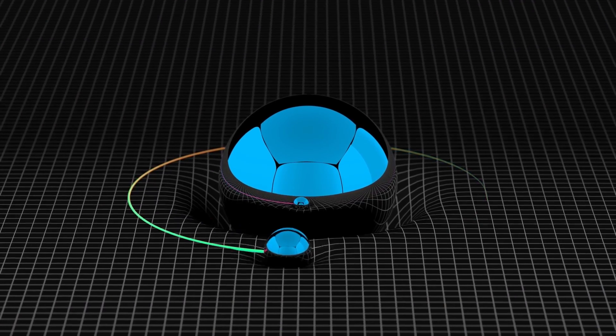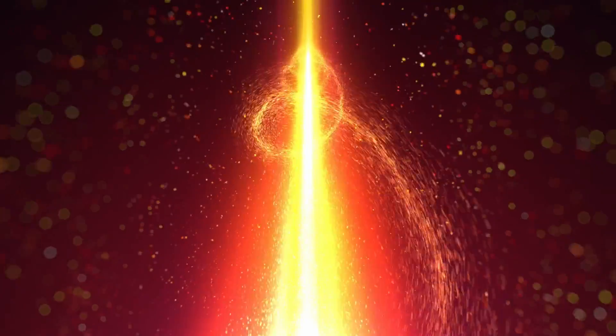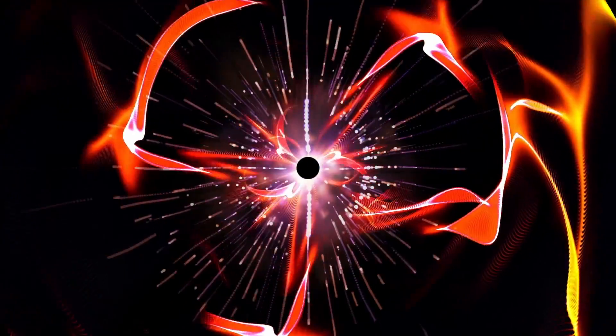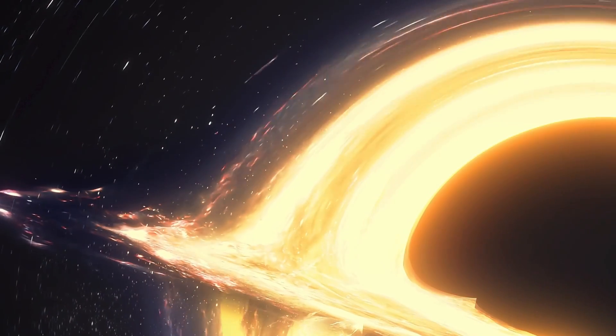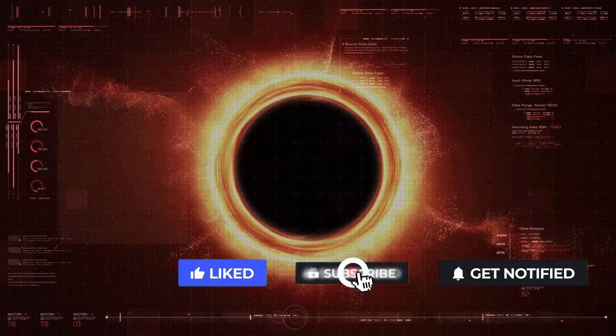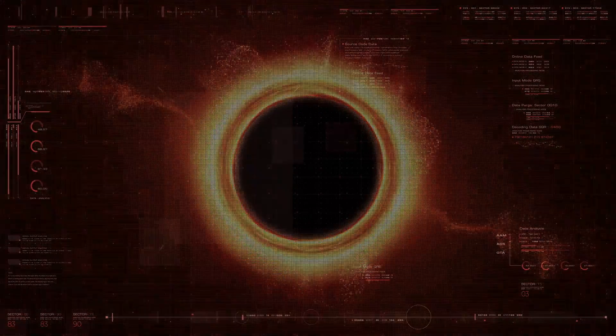In essence, gravity doesn't directly influence light. It's the warped space-time around a significant object, like a black hole, that creates an apparent change in the light's motion. At the event horizon, space-time warps into itself. Consequently, light cannot escape a black hole once it has crossed that final threshold.